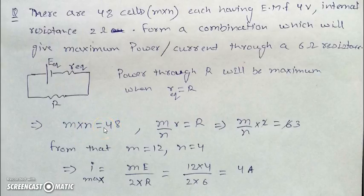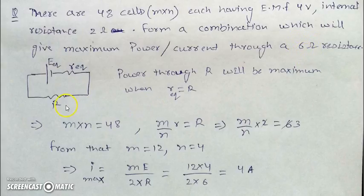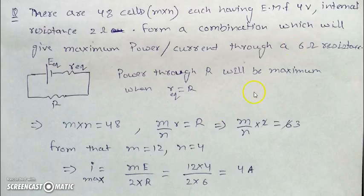For the example: 48 cells each with EMF = 4 V and internal resistance r = 2 ohms, connected to a 6 ohm resistance. We need m × n = 48, and the equivalent internal resistance mr/n = 6 ohms. With small r = 2, this gives m/n = 3.